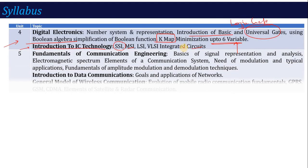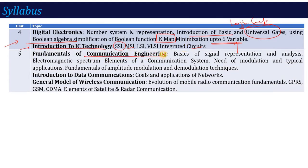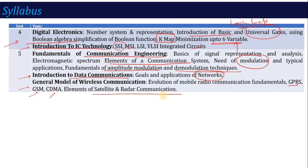The last unit covers fundamentals of communication engineering. You will talk about what communication is, the main elements of a communication system, and modulation — why modulation is needed and the methods used for amplitude modulation and demodulation techniques. After that, introduction to data communication, data communication goals, network layer functions and applications, general model of wireless communication system, and terms like GPRS, GSM, CDMA, and elements of satellite and radar communication.